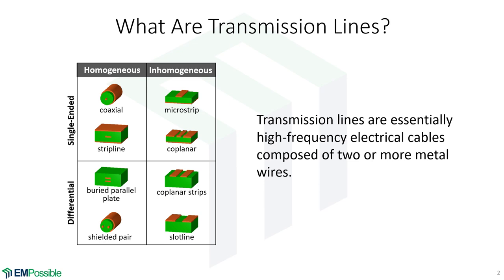In these differential lines, there's really no difference between the two lines — maybe we call one a plus and one a minus. It's an AC signal, so what's plus and minus keeps swapping back and forth. Then we have single-ended signals, where we have essentially just one signal line and then another big ground line.